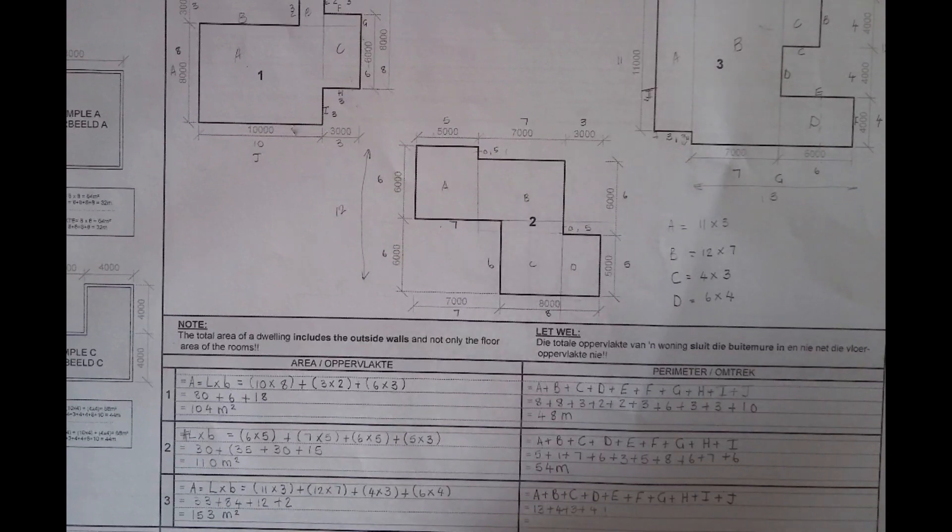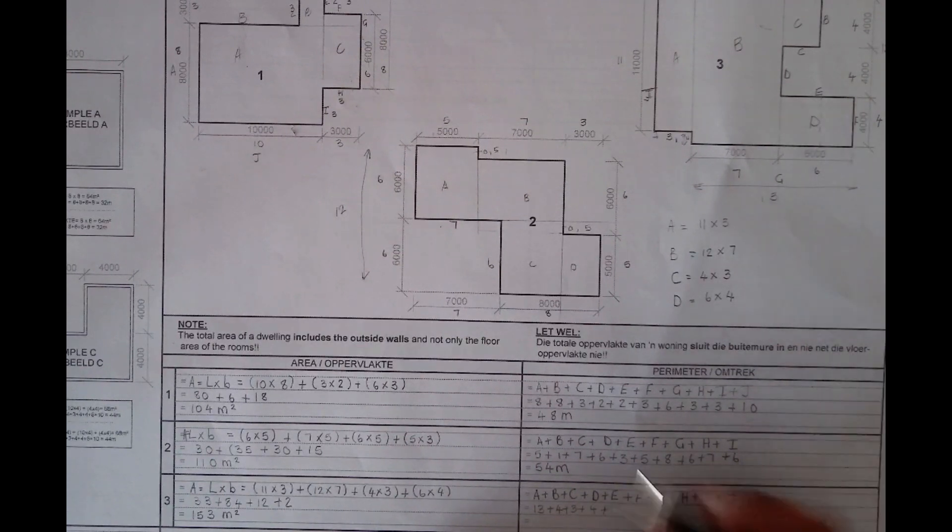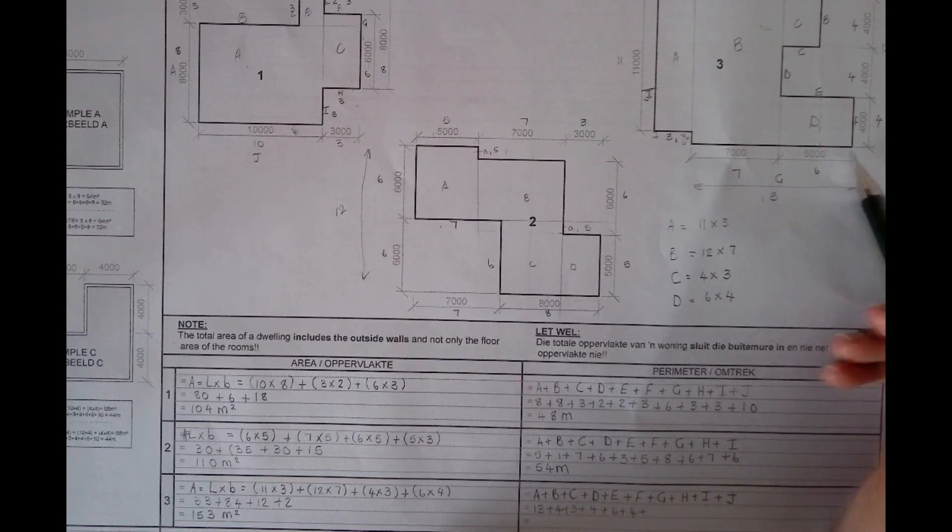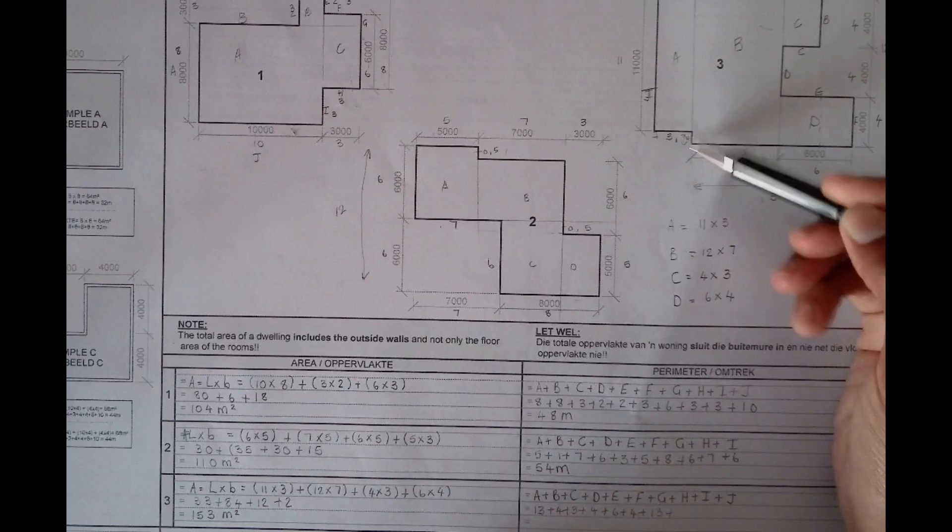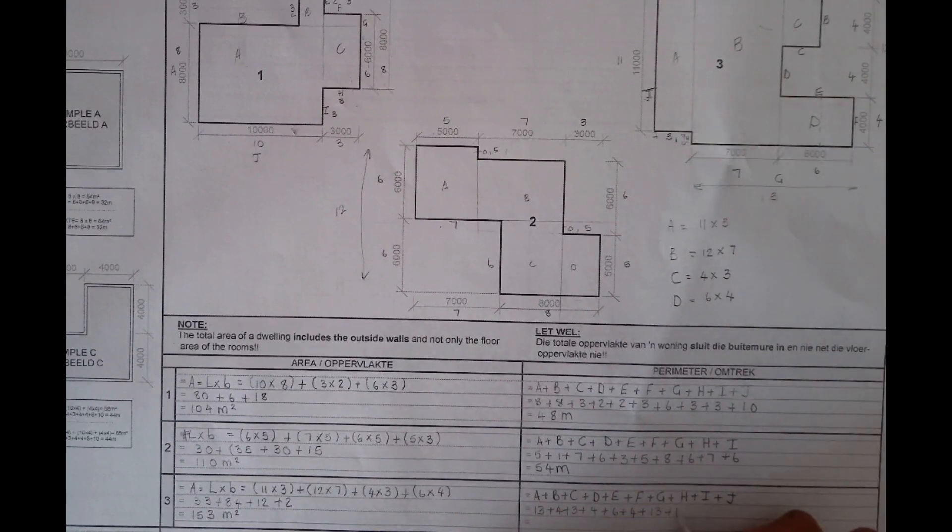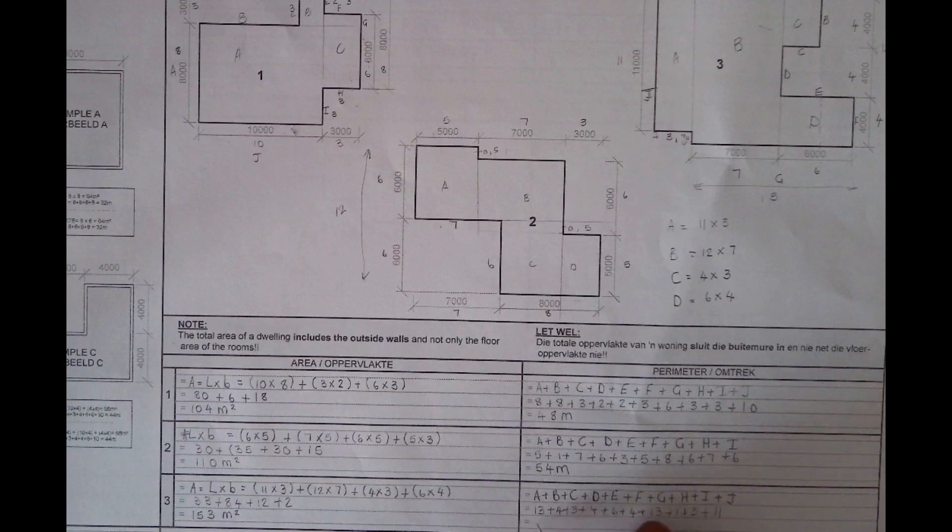Then for E it's 6, 6 again plus 4. And then the total of this side is 13. We figured out that this one here is just 1, then the 3, and then the last one is 11. So here we would get a total of 62 meters.